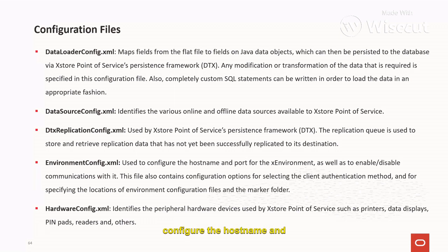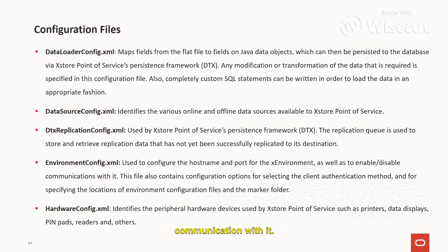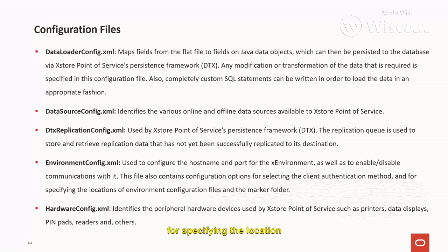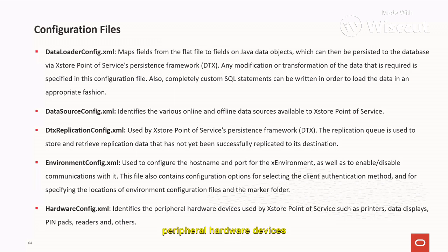The environment_config.xml file is used to configure the host name and port for the application's environment, as well as to enable or disable communication with it. It also contains configuration options for selecting the client authentication method and specifying the location of environment configuration files and the marker folder.